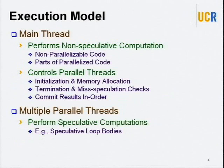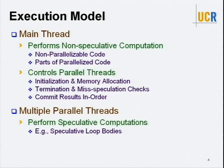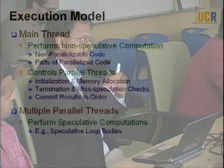So the model is: we have one main thread and then any number of parallel threads. The main thread does the non-speculative computation. The parallel threads do all the speculative computations. The main thread controls what these parallel threads do — it creates them, initializes, gives them work, takes back the results, performs a speculation check, and commits the results in order. That means if you assign work to many threads one after another, you commit the results also in the same order, making sure you are following the sequential semantics of the program.